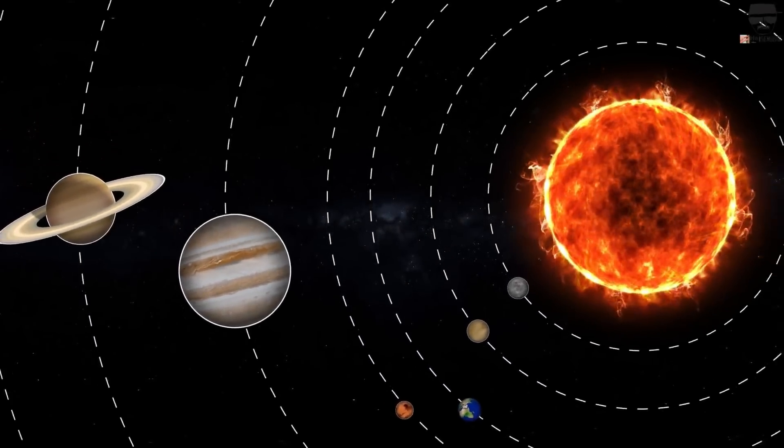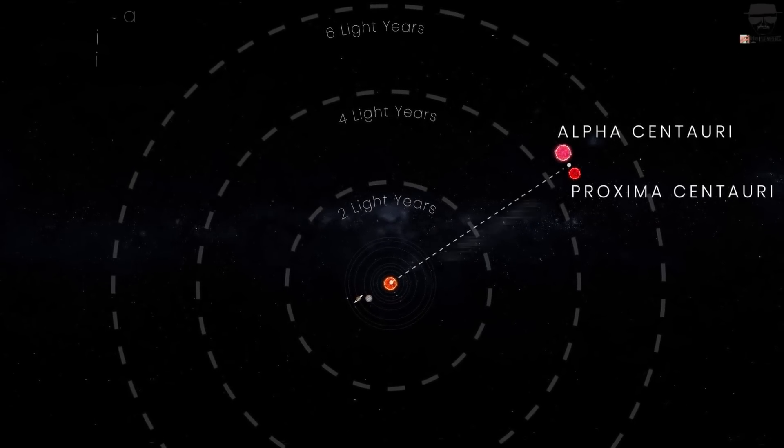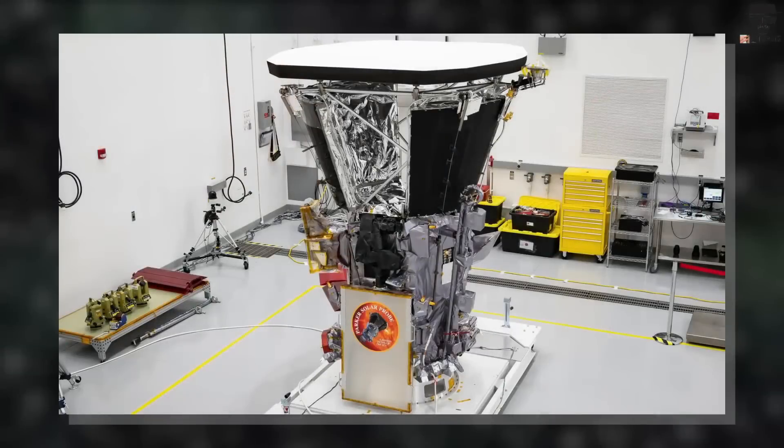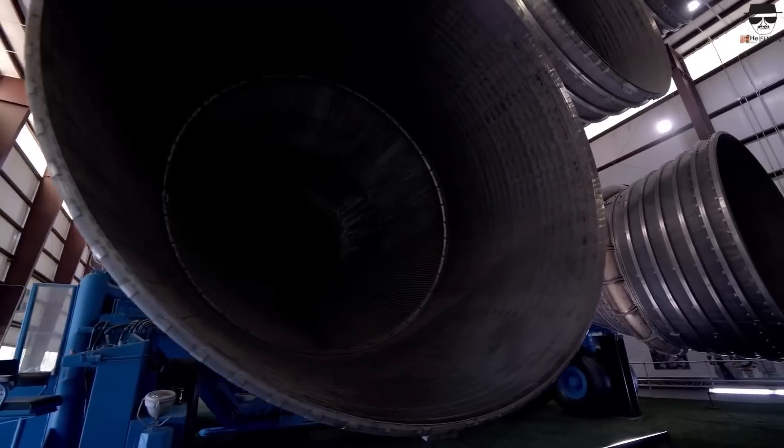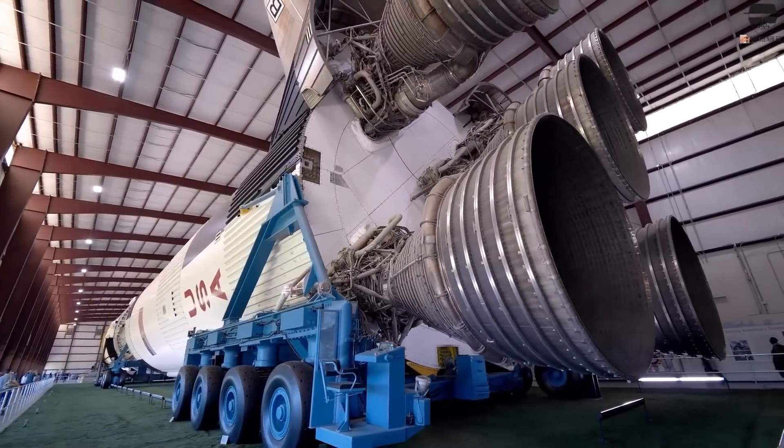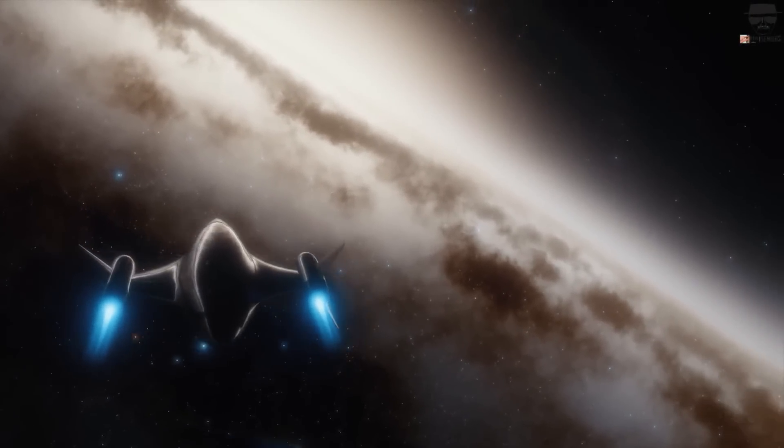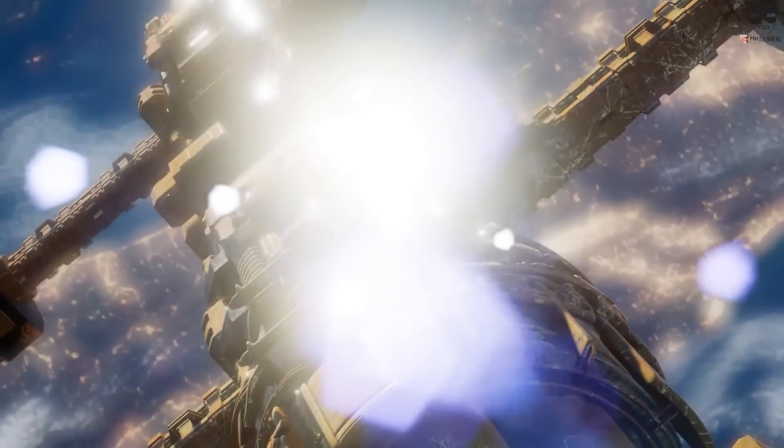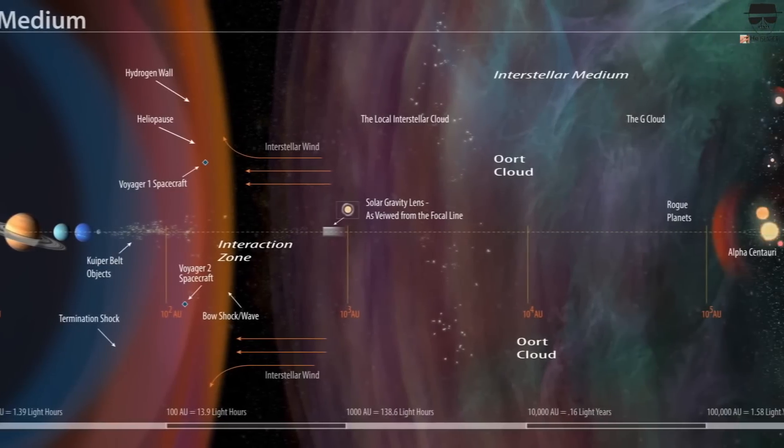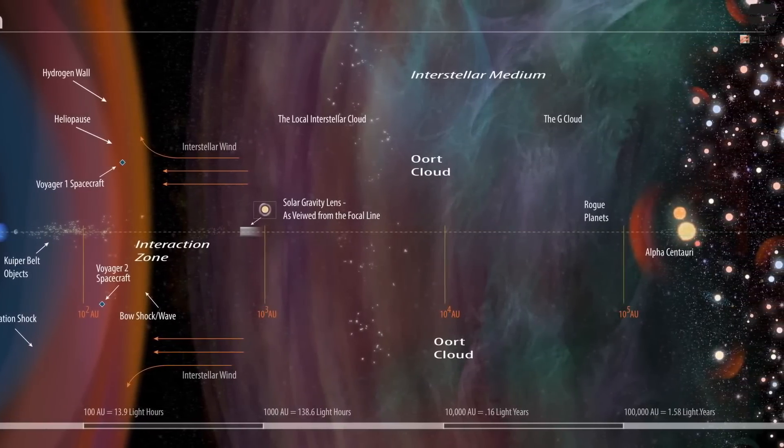Proxima Centauri is the nearest star to Earth. It's 4.25 light years away or 25 trillion miles away. The Parker Solar Probe will achieve a top speed of 450,000 miles per hour, making it the fastest spacecraft ever. At such speed, it would take just 20 seconds to travel from Los Angeles to New York City. Yet the solar probe would take 6,633 years to reach Earth's nearest neighboring solar system.